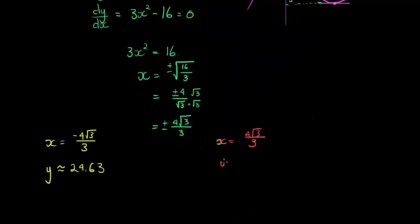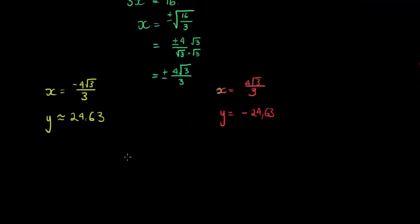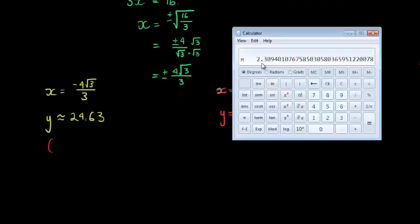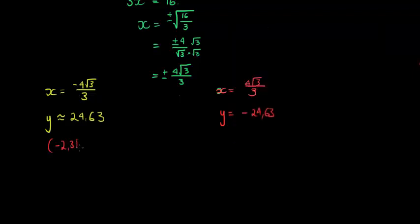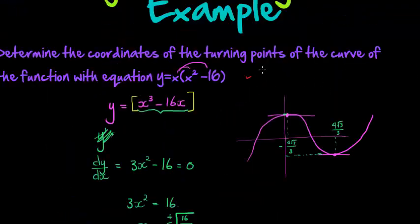This answer is y is equal to negative 24.63. That means that the coordinates that we now have is: this one was negative 2.31 and the y value 24.63, and this one was positive 2.31 and the y value was negative 24.63. And there's the two coordinates for the turning point of this function.